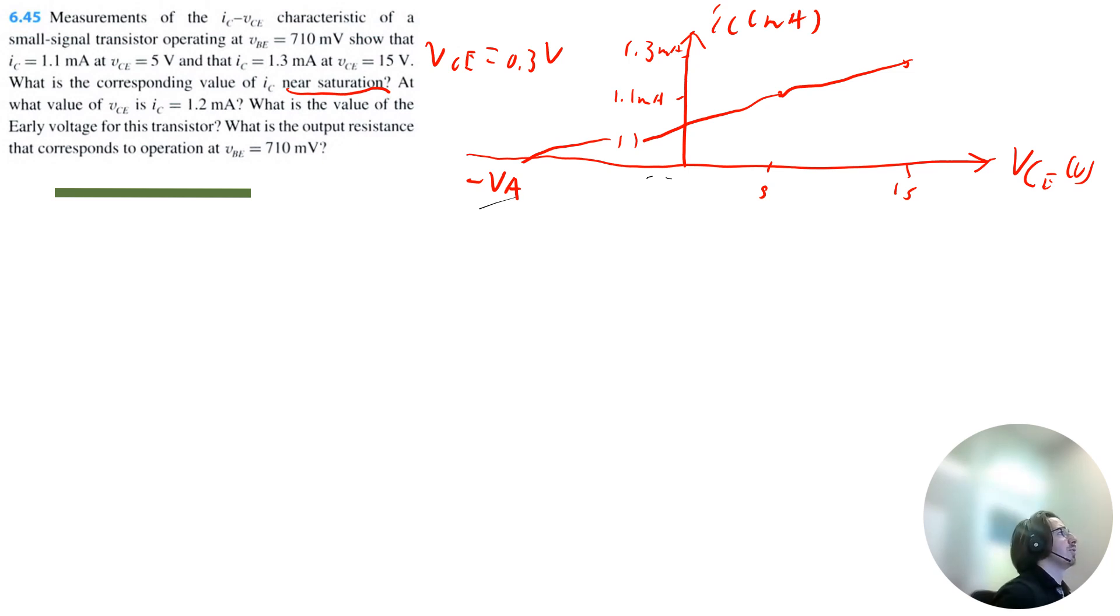Now I'm interested in the slope of this curve. So that's going to be, if we do the y values, that would be 1.3 milliamps minus 1.1 milliamps, and then we'll divide by the change in the voltage. So that's 15 volts minus 5 volts. So we're getting a slope of 0.02 milliamps per volt.